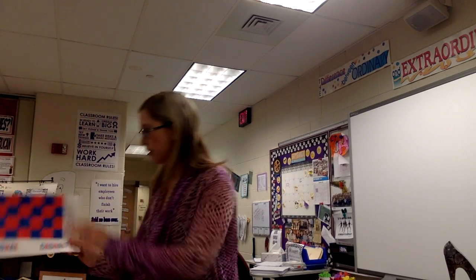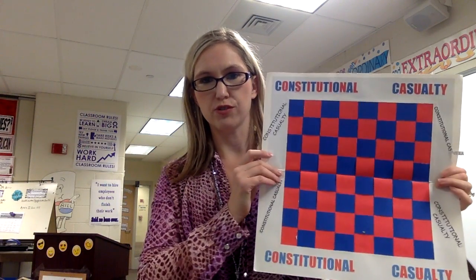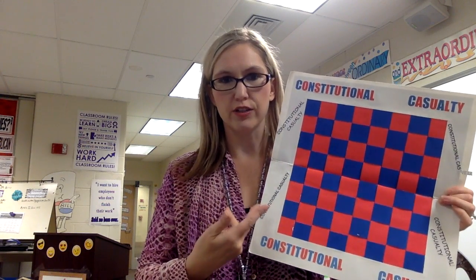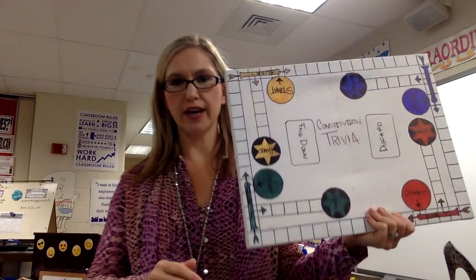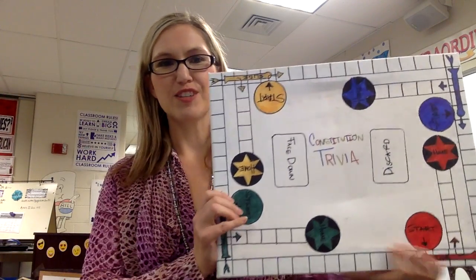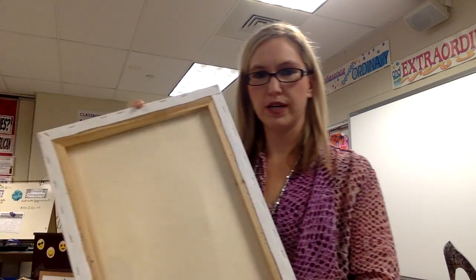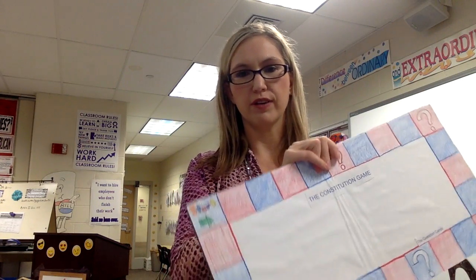The game can be completely made up or you can base it off of a game that you already know. For example, this game they call Constitutional Casualty — this one is obviously based off of checkers or chess, but they still made their own game board. This one, Constitution Trivia, is based off of a game. So you can base it off of a game. Some students put it on a canvas, others made it out of construction paper. Some students take an older game — obviously ask your parents first — and cover the existing board with their own game board.